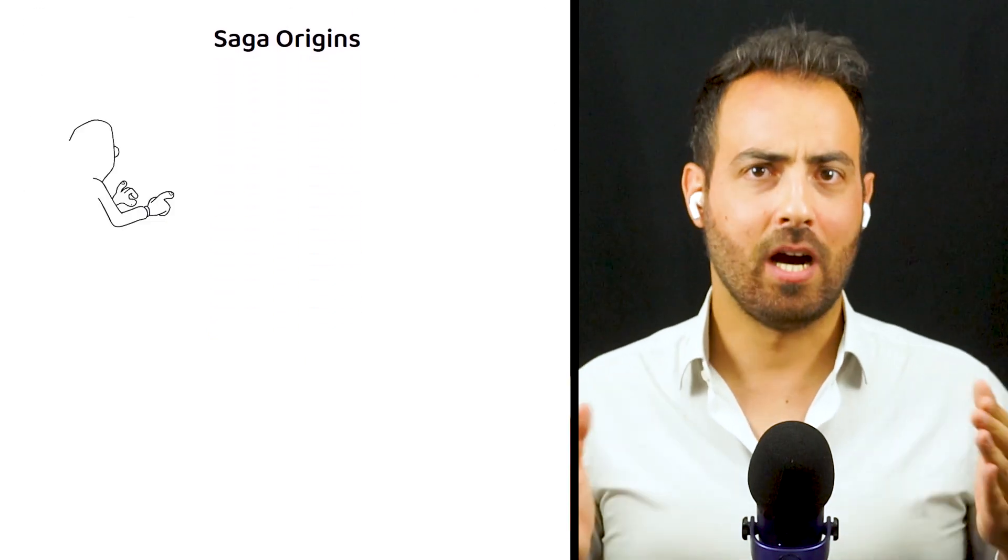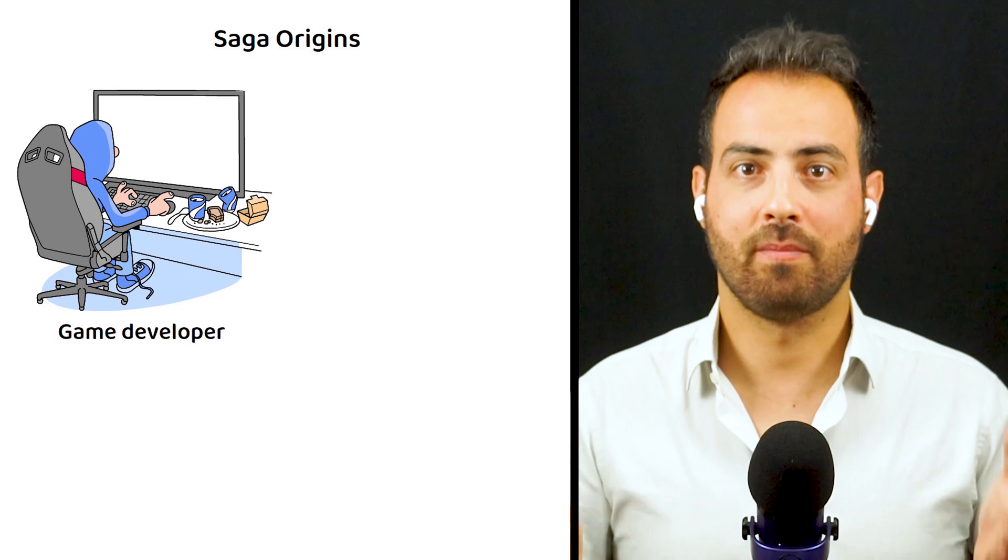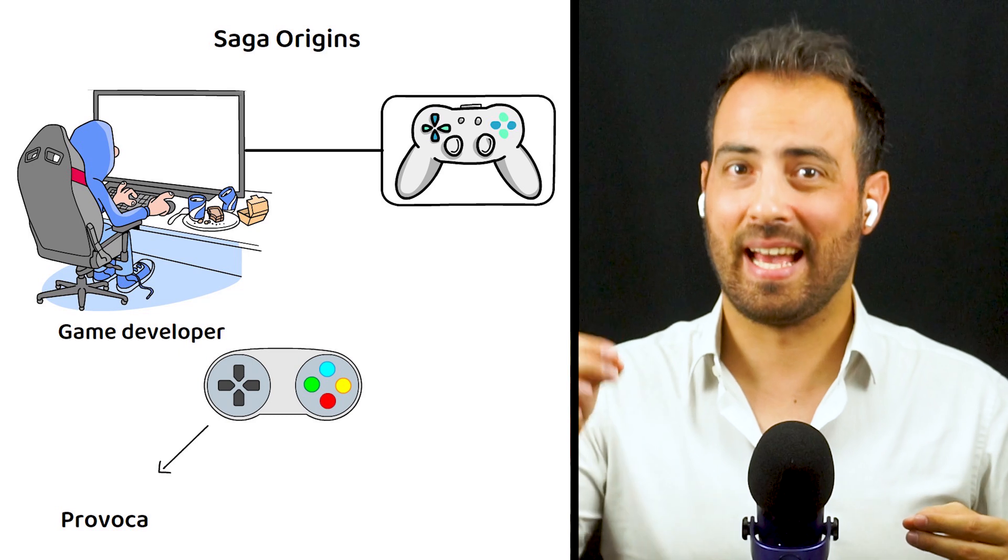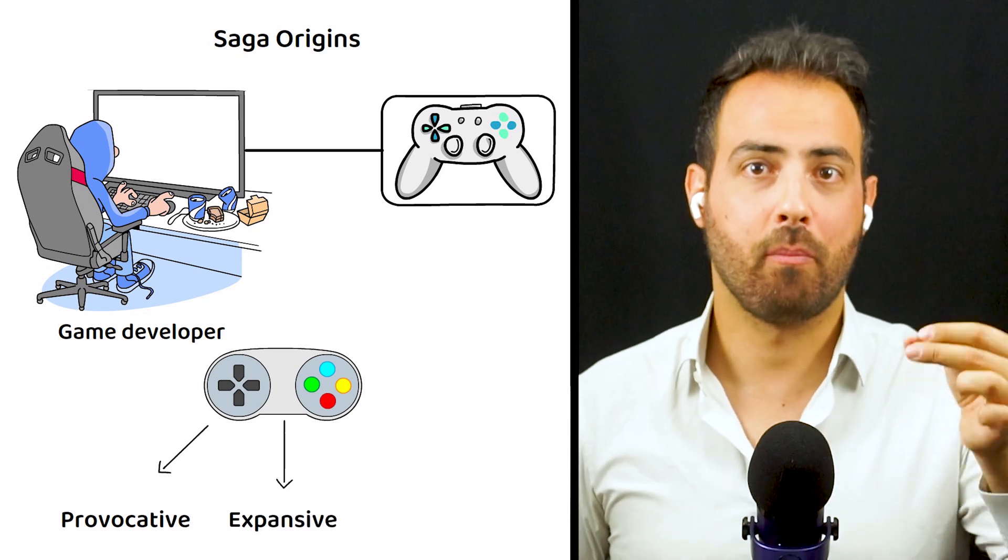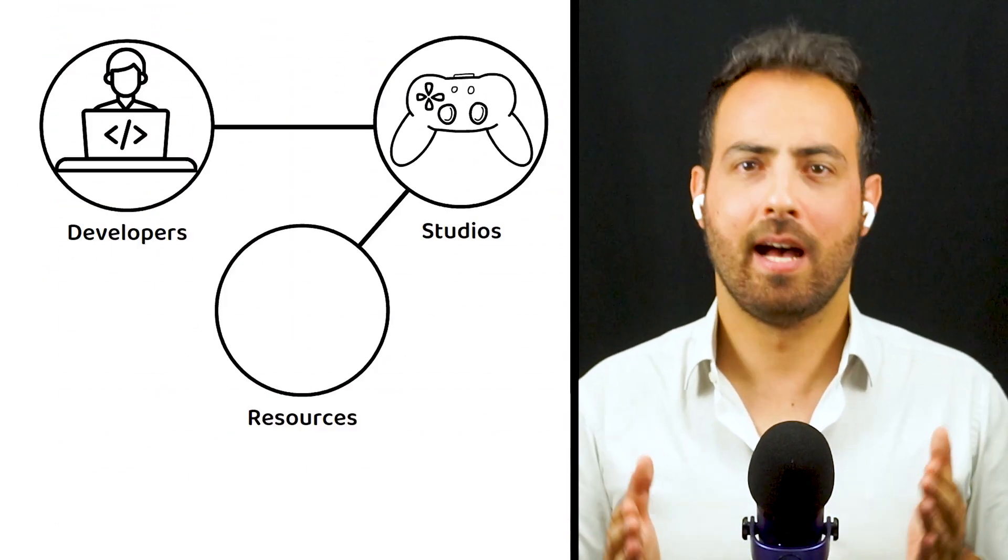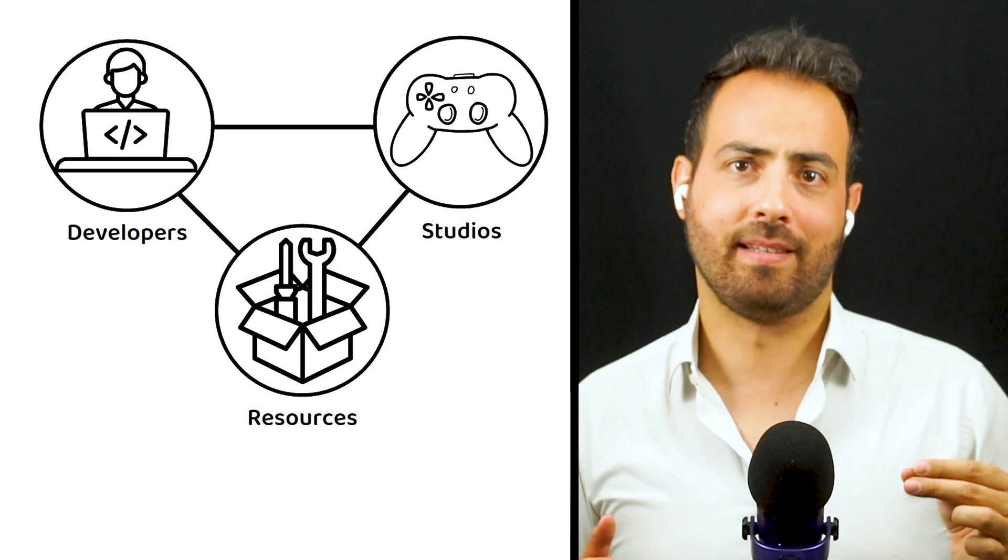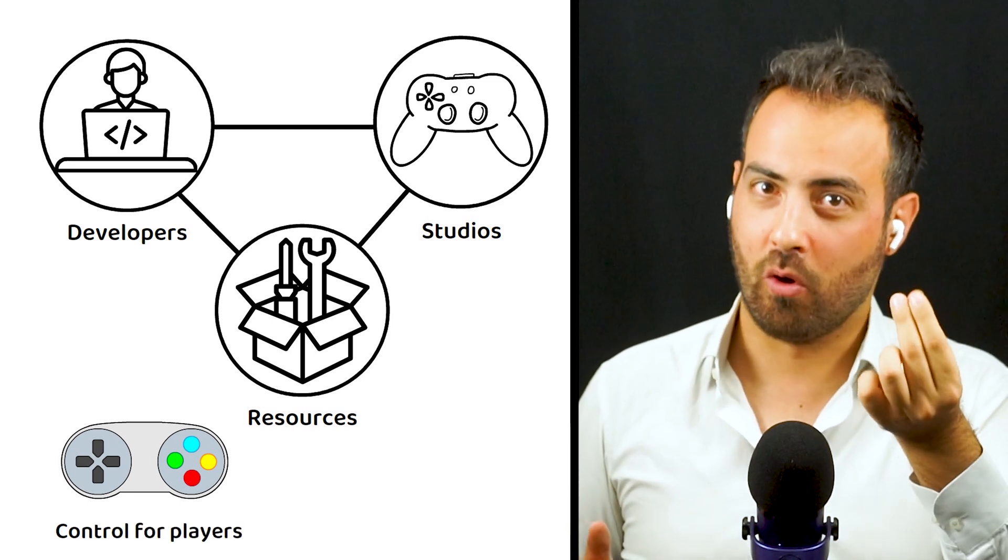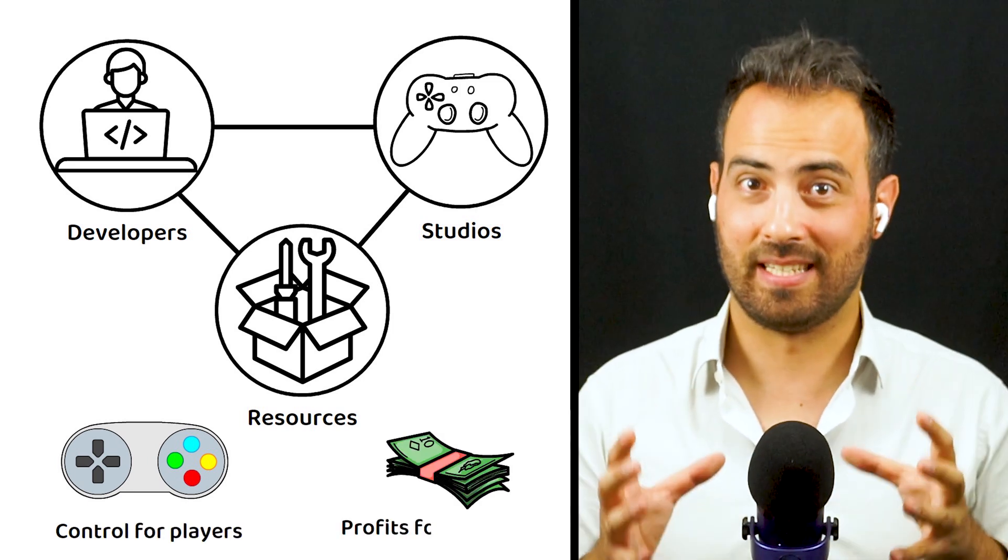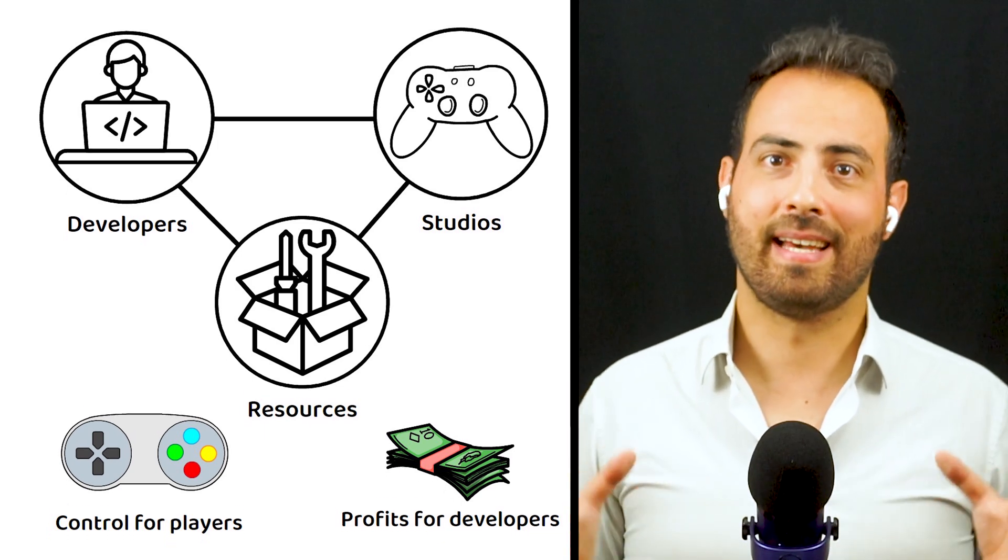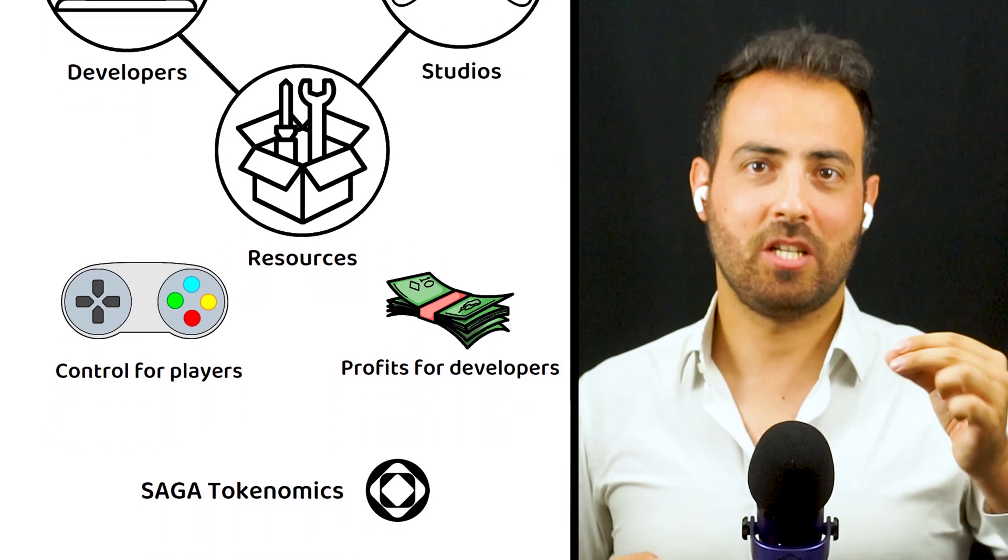Saga Origins is a publishing system for game developers and claims to be the home for the most provocative, expansive, and boundary-pushing gaming experiences. By mixing indie developers with studios and resources, Saga looks to turn their ideas into playable realities and properties, and ultimately offers greater control for the players and better profits for the developers than seen in traditional game development. Now that we know what Saga is and how it works, let's explore the tokenomics of the Saga token.